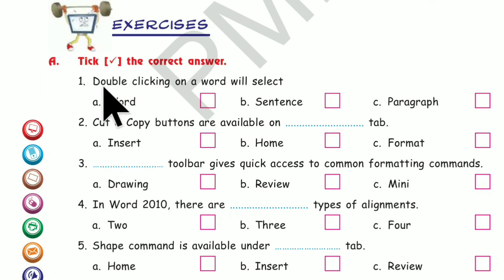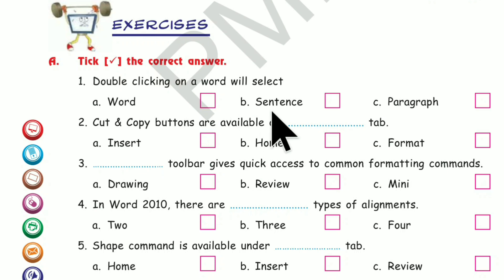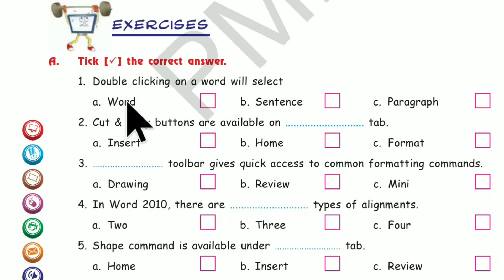Number 1. Double clicking on a word will select — a word, a sentence, or a paragraph? The correct answer is: a word. Tick here. Double clicking on a word will select a word.